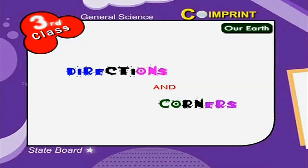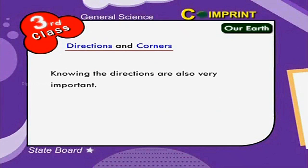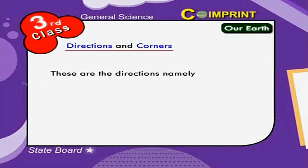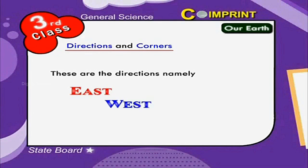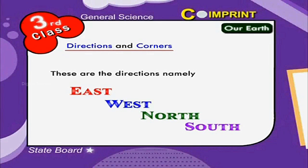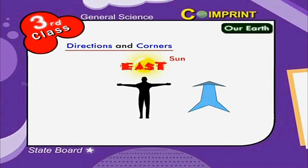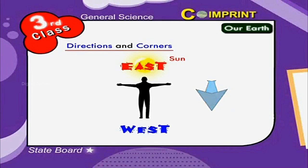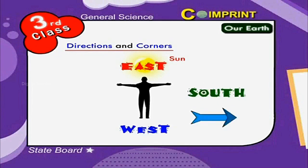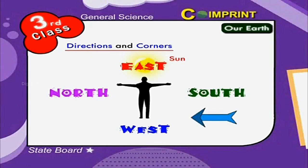Directions and corners. Knowing the directions is also very important. These are the directions: East, West, North and South. How can we find them? For example, when a boy stands facing the sun with his hands spread out, the direction in front of him is the East. Behind him is the West. To his right hand side is the South and his left hand side is the North.